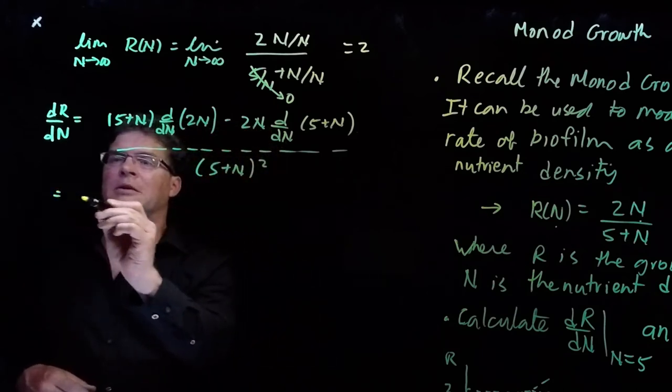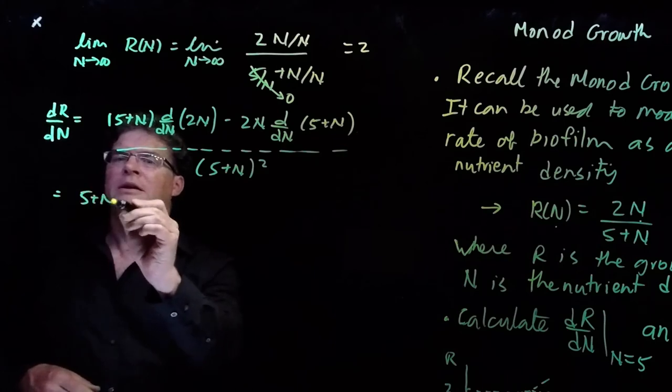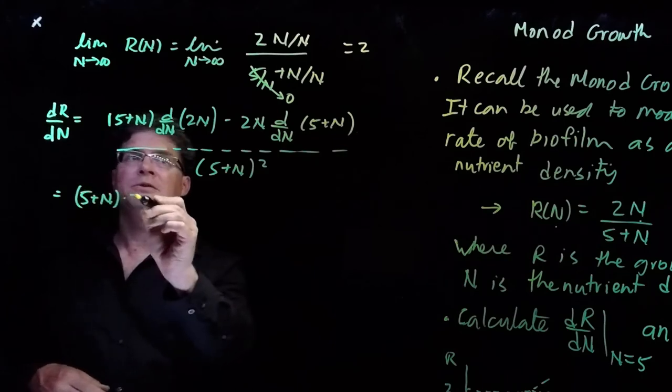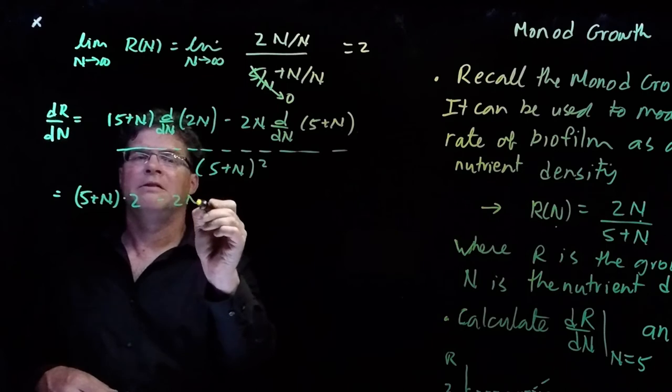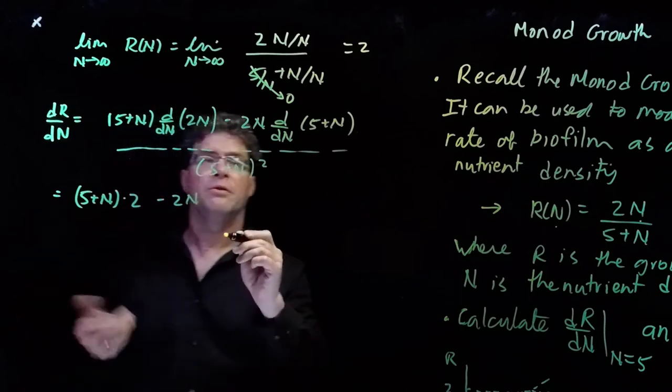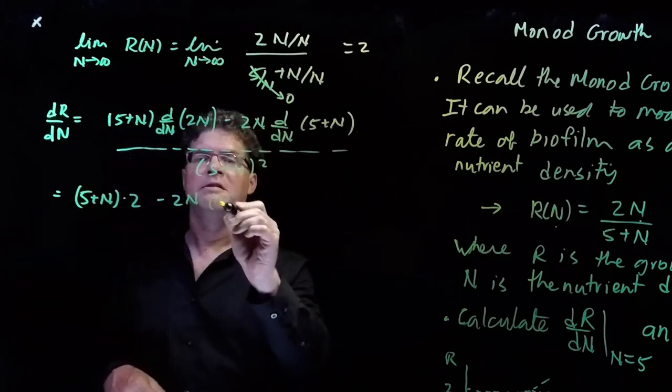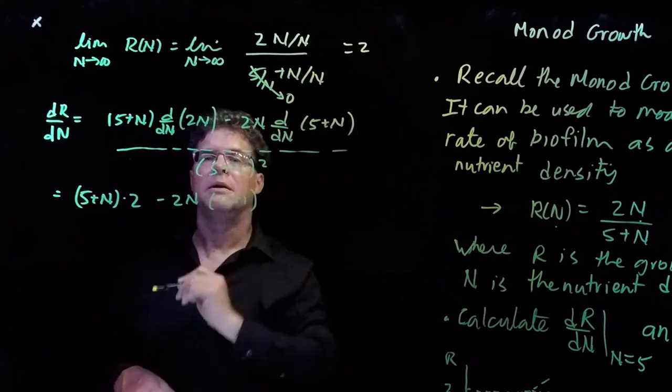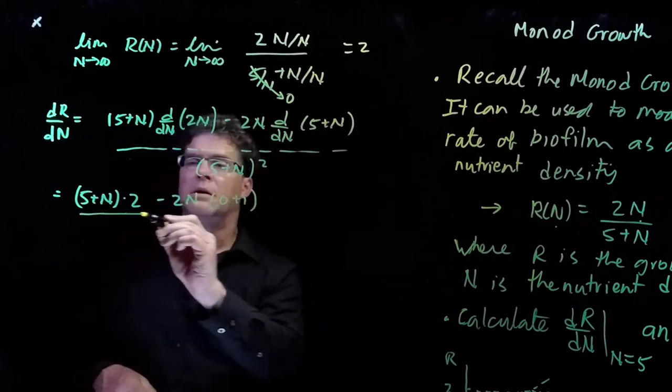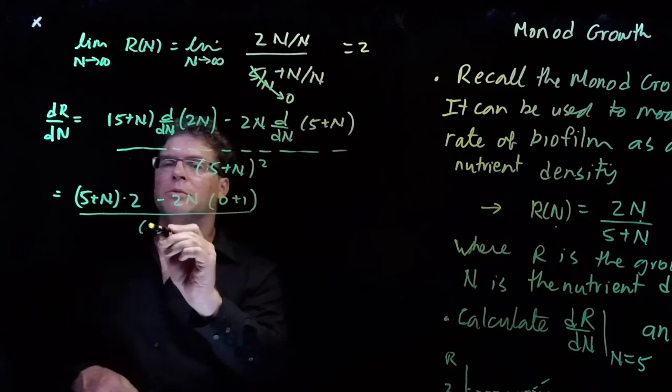And so we can simplify this a little bit. We have 5 plus n. Now the derivative of 2n is 2. Then we have minus 2n. The derivative of 5 plus n is 0 plus 1. And then we draw the line and square below.